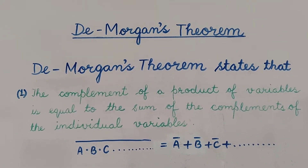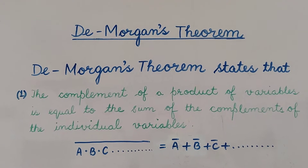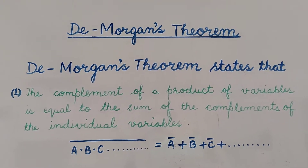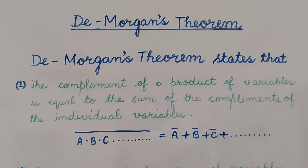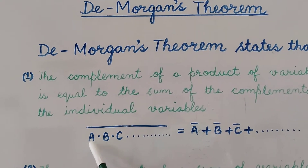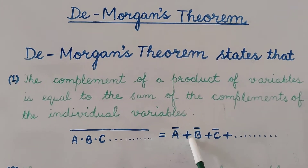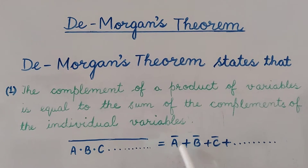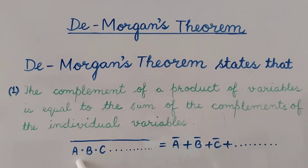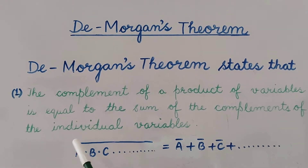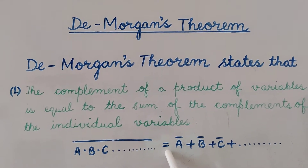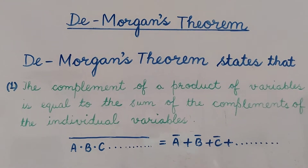There are two types of De Morgan's theorem. The first theorem states that the complement of a product of variables is equal to the sum of the complements of the individual variables. Mathematically, the complement of the product of the variables will be equal to the sum of the complement of the individual variables.